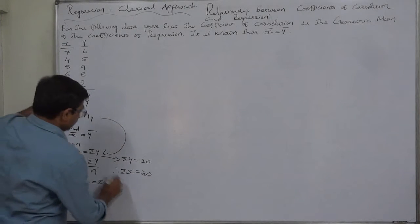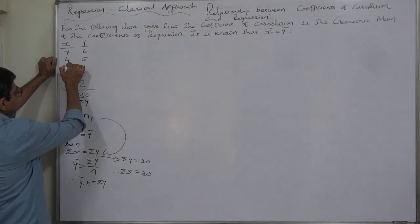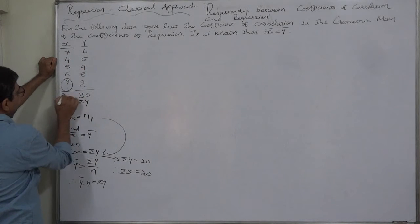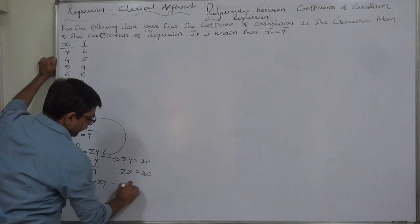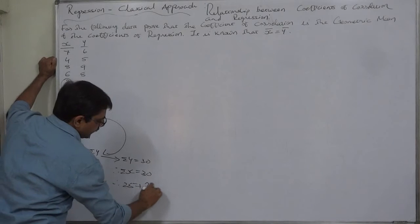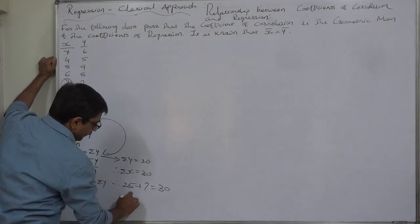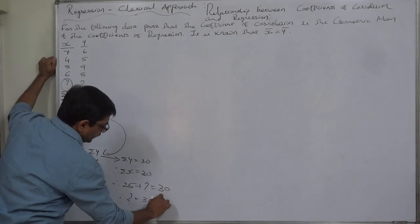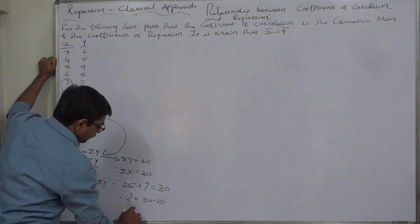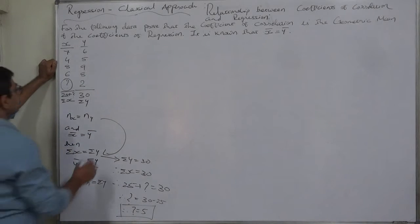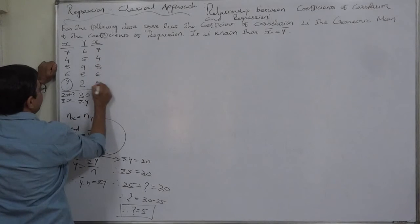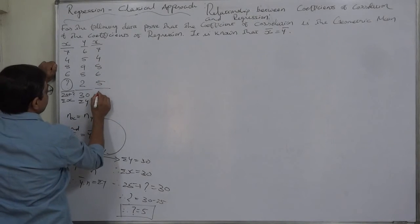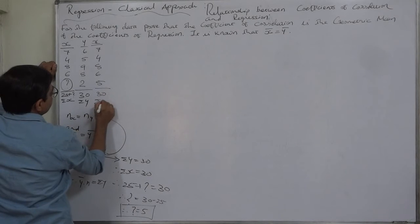Now for x: 7 + 4 + 8 + 6 + ? = σx. That means 25 + ? = 30. Therefore the missing value is 30 − 25 = 5. So x is now 7, 4, 8, 6, and 5, and σx = 30.